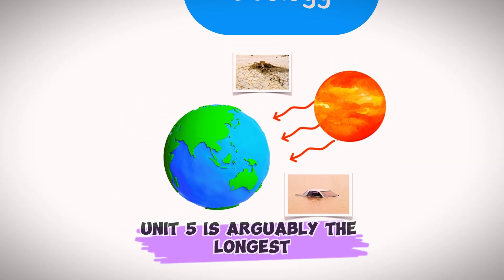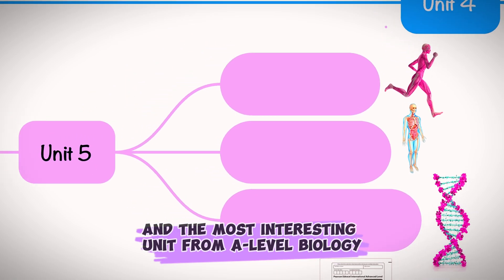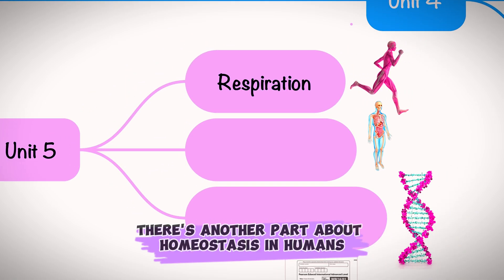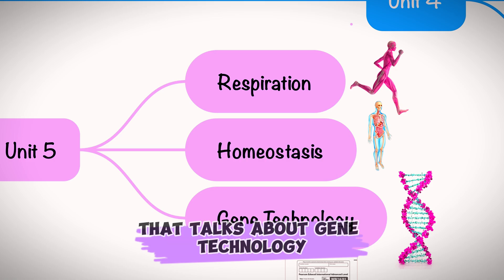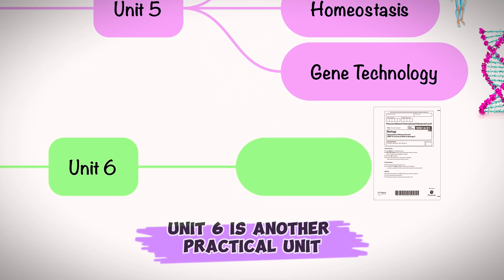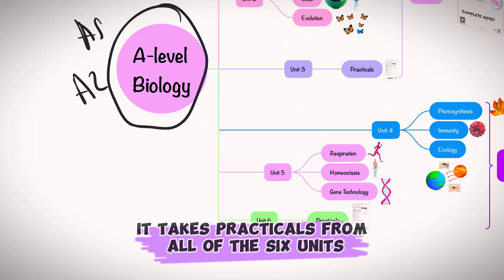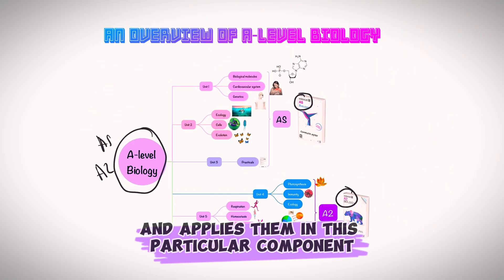Unit 5 is arguably the longest and most interesting unit in A-level biology. It covers respiration, homeostasis in humans, and gene technology. Unit 6 is another practical unit — it takes practicals from all six units and applies them in this component of A-level biology.